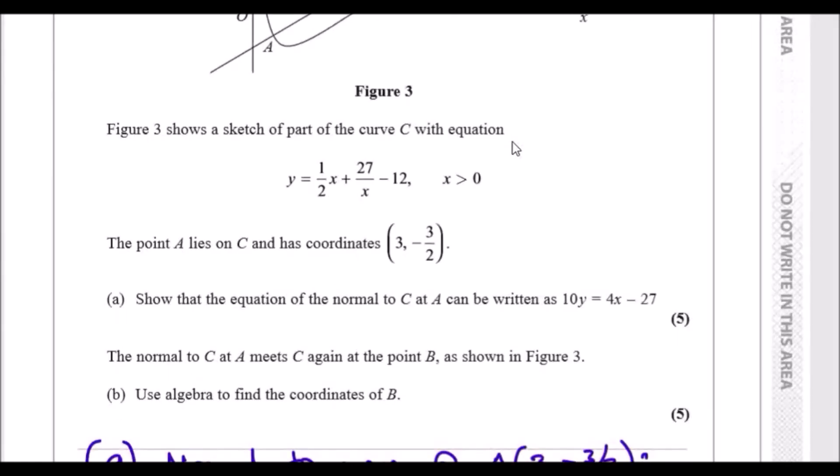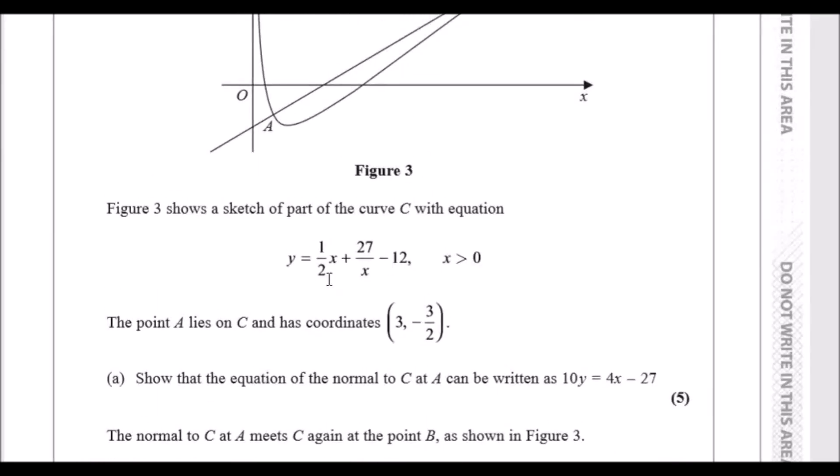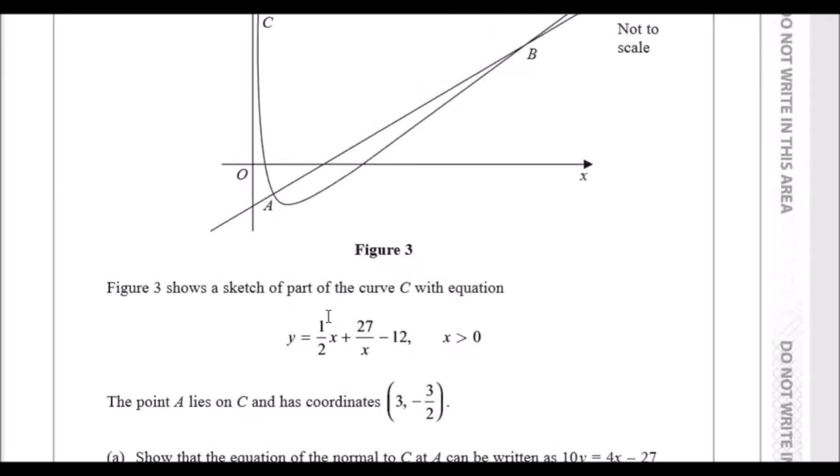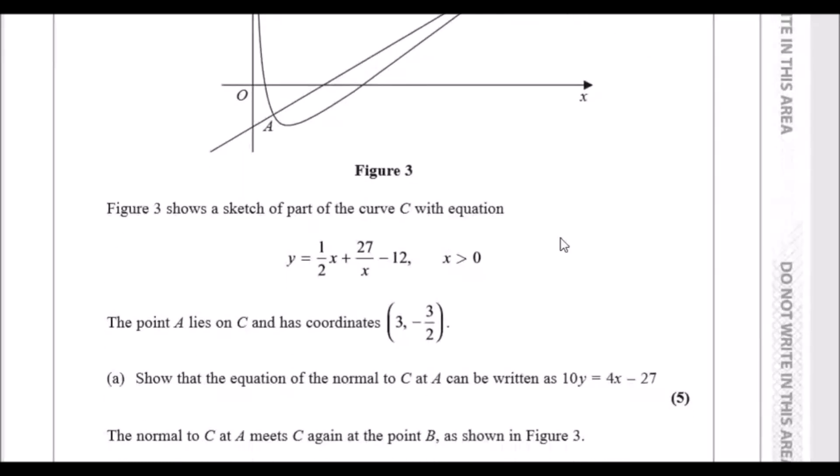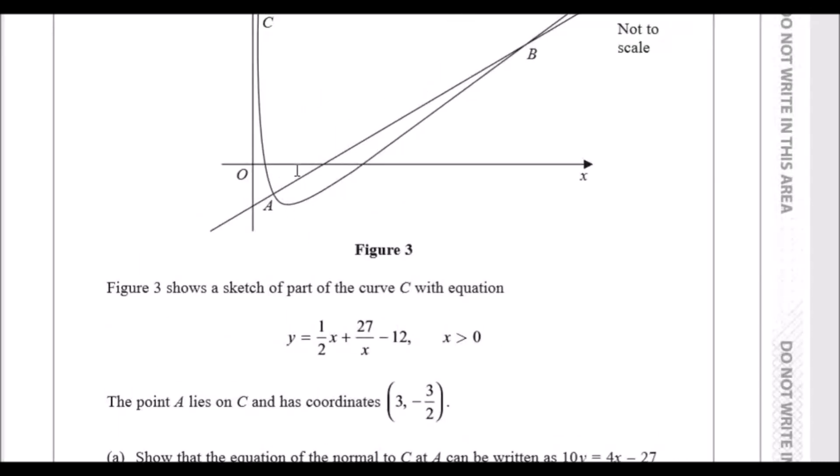Figure 3 shows a sketch of part of a curve C with the given equation. The point A lies on C and has coordinates 3 and minus 3 over 2. Show that the equation of the normal to C at this point can be written in this equation. So this equation is actually a perpendicular equation. To get the normal you first need a tangent, and the tangent at this point is basically an imaginary straight line that touches exactly once. This normal is 90 degrees to the tangent.